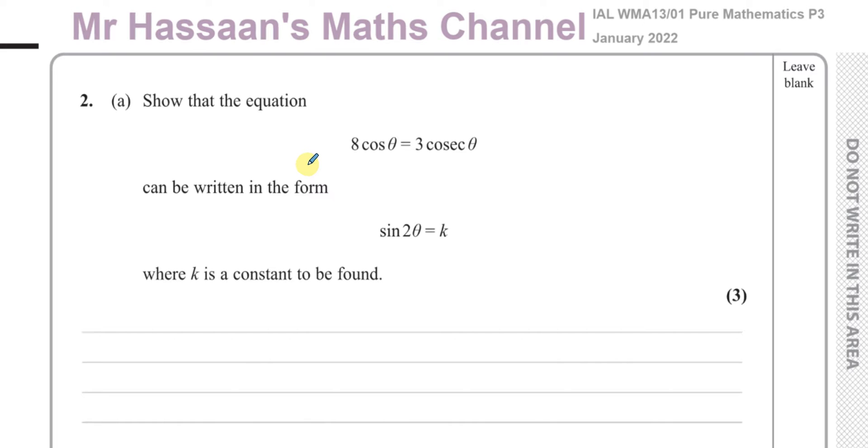This is Pure Mathematics P3 from the International A-Level Edexcel January 2022 exam. This question here, question 2 part A, says show that the equation 8 cos θ equals 3 cosec θ can be written in the form sin 2θ equals k, where k is a constant to be found.